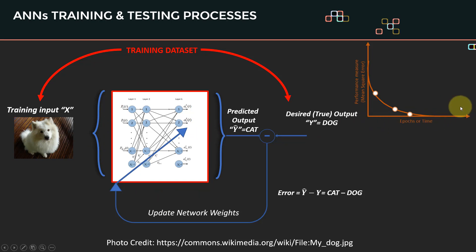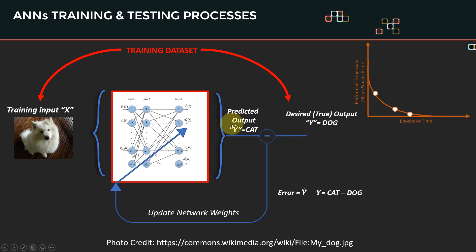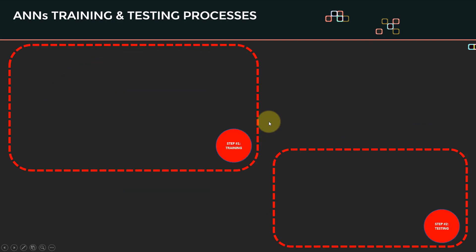Generally, when we train our artificial neural network — if you recall, there was a number like 50 — that is the epoch number. We start at epoch one, update the weights, go to epoch two, update the weights again, and keep repeating until the error becomes very small. When the error is very small, the network's predictions match what we want: it outputs 'dog,' and 'dog minus dog' is zero — meaning the network makes predictions that match the desired output.